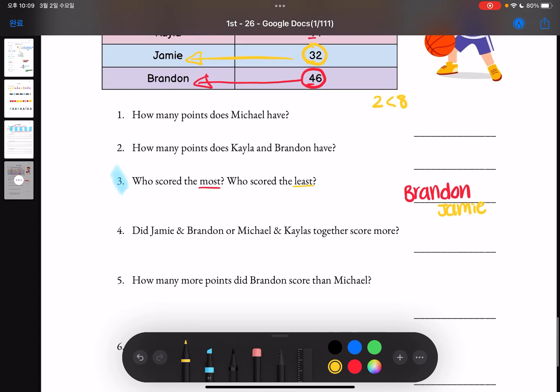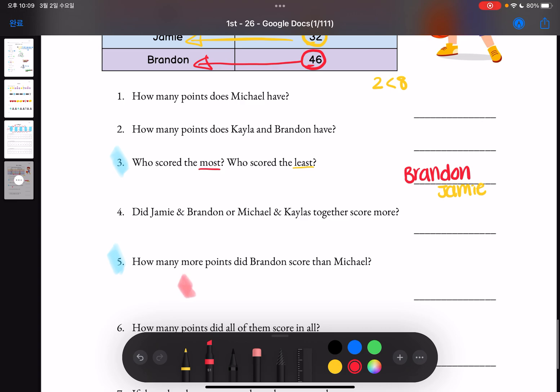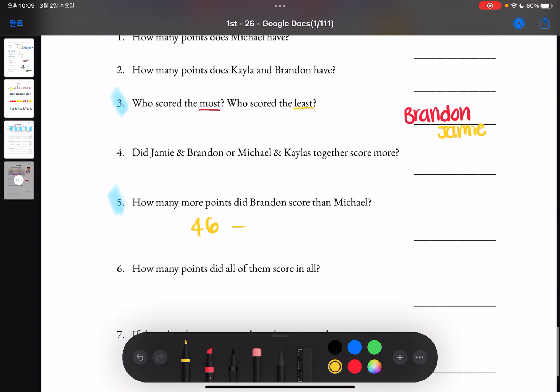Let's look at number five, our last question. How many more points did Brendan score than Michael? So we have to look at Brendan's score which is 46 and do subtraction. 46 minus, Michael scored 38, so we have to do minus 38.